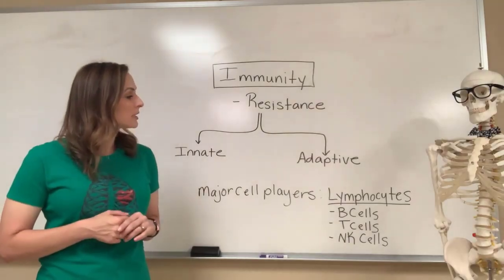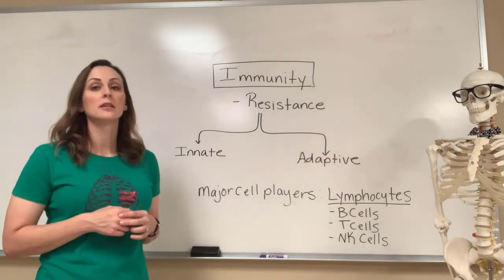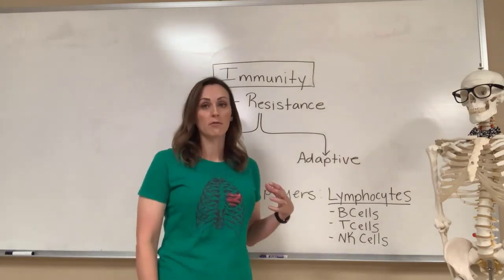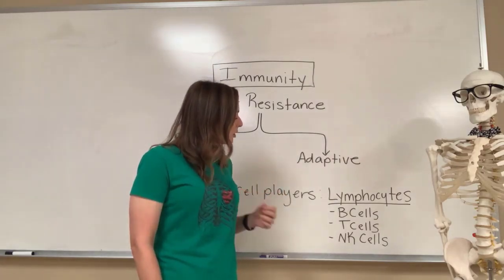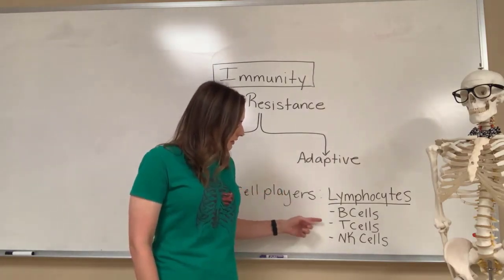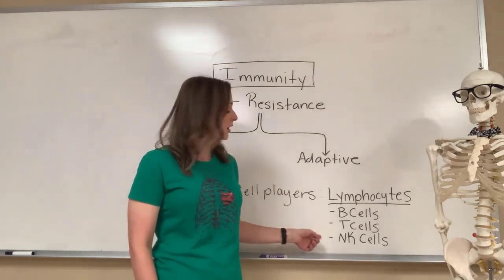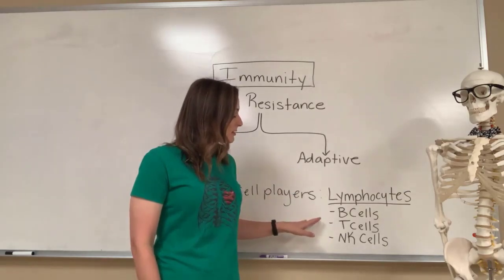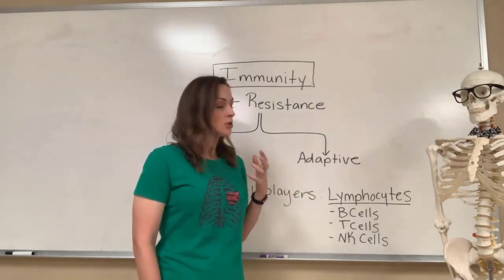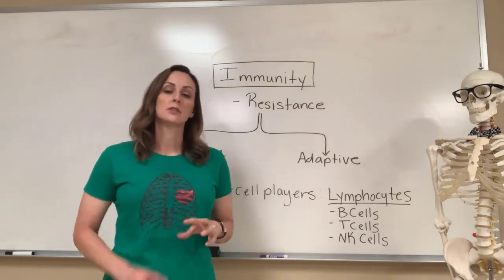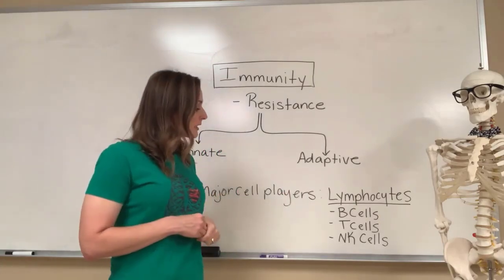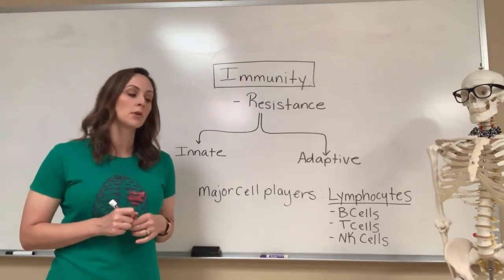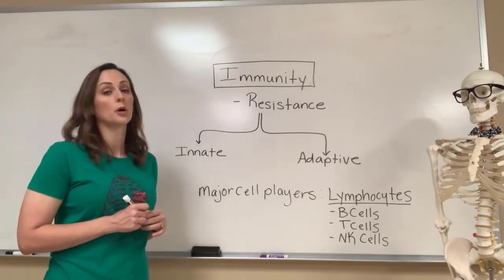The major cell players in the immune system are known as lymphocytes. There are three major kinds of lymphocytes that we will go over in detail. The three are called B cells, T cells, and NK cells, also known as natural killer cells. The B and T cells wander throughout the body — they're able to enter the bloodstream or lymphatics to travel, and they'll typically last several years. Lymphocyte production is also known as lymphocytopoiesis.